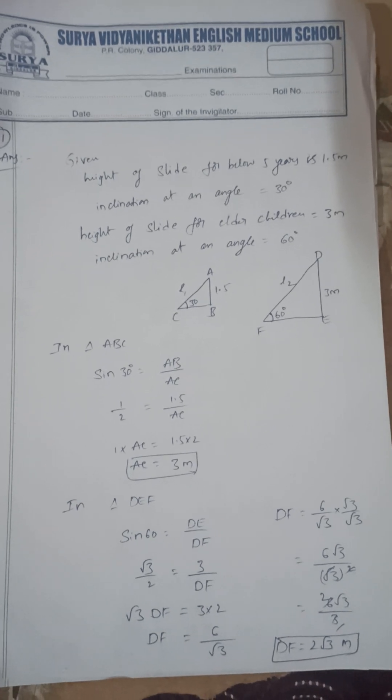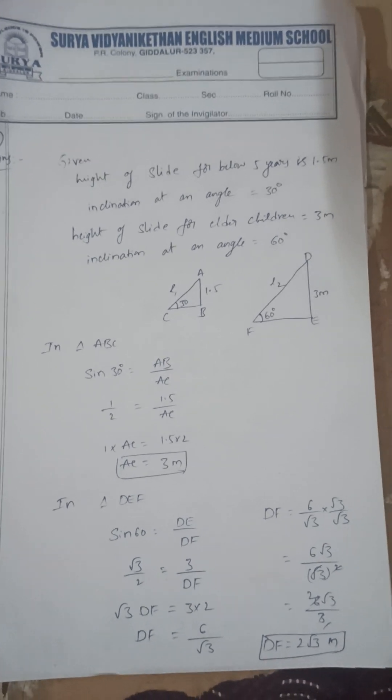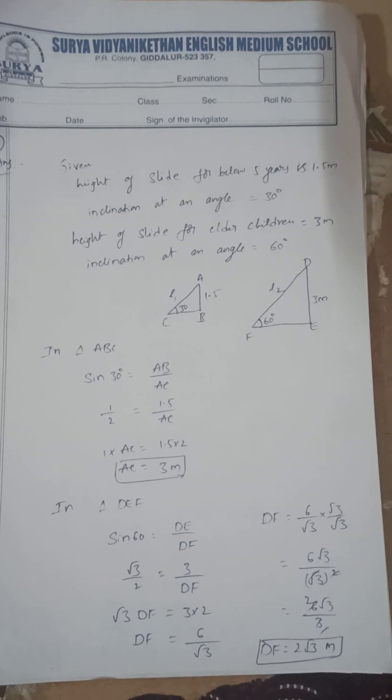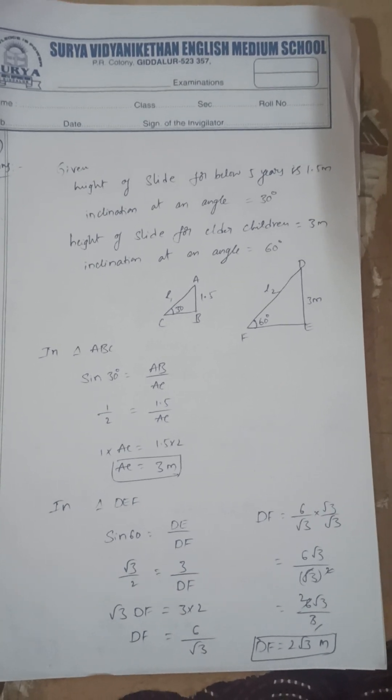31b: two slides. The first slide height is 1.5 meters, another slide height is 3 meters. The length of these slides are one is 3 meters, another one is 2 root 3 meters. Here we can use the sine ratios.